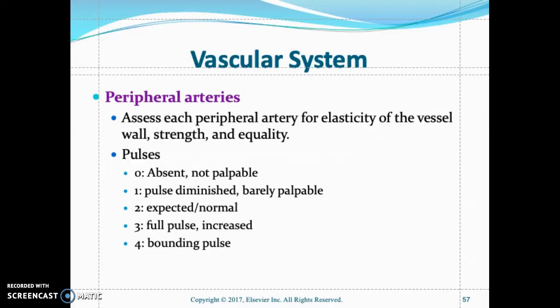Assess each peripheral pulse for elasticity of the vessel wall, strength, and equality. The normal pulse is 2+. A pounding pulse is noted as 4+, and zero is an absent or non-palpable pulse.